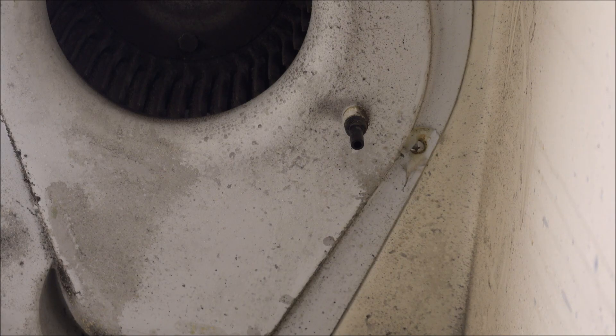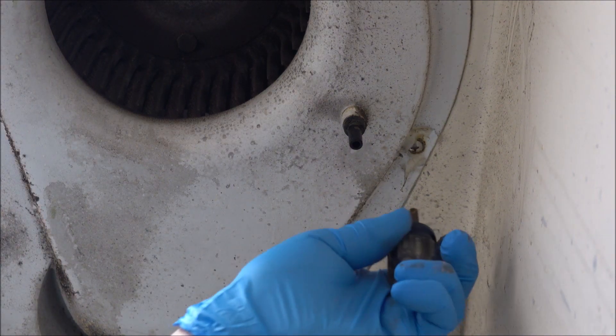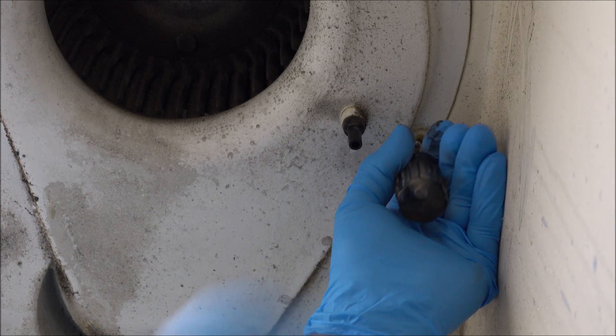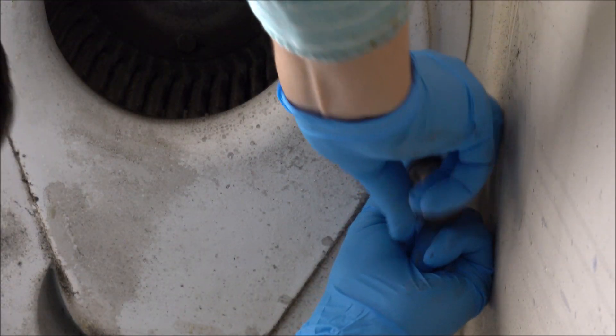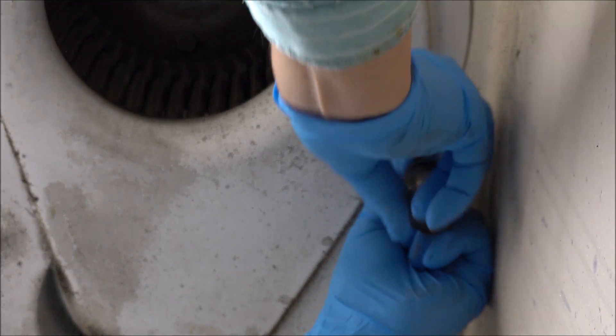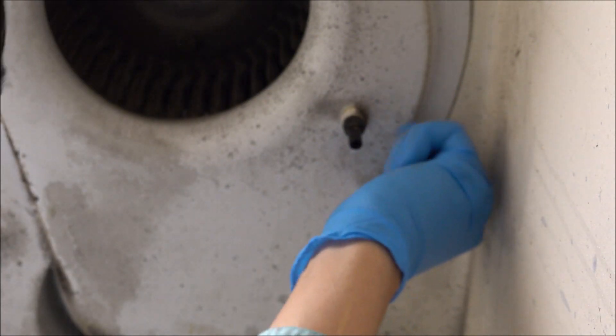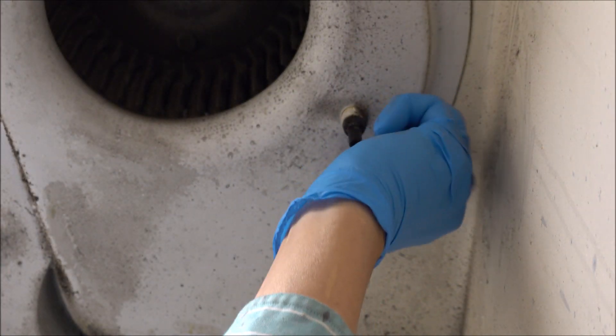It's just some silicon caulk that I put on there to prevent the screws from corroding. Once we get that off, then we take our screwdriver and pull the screws out. One down and seven more to go.